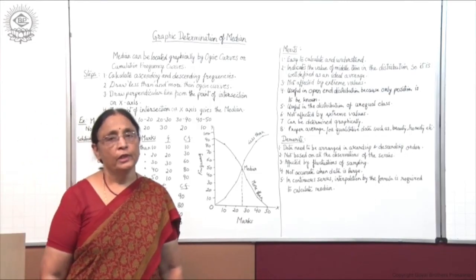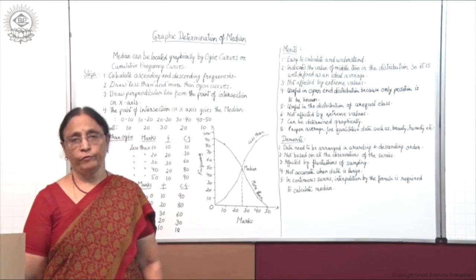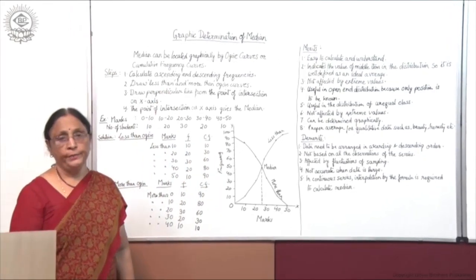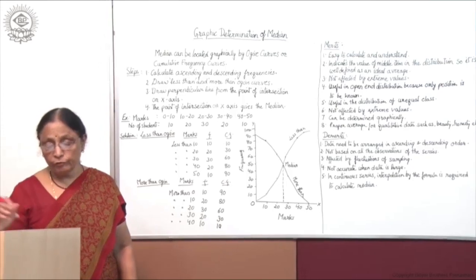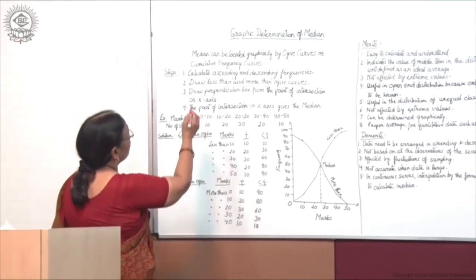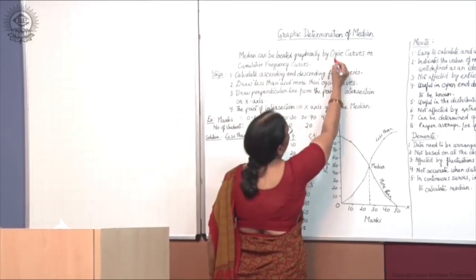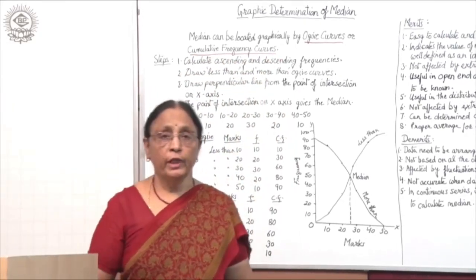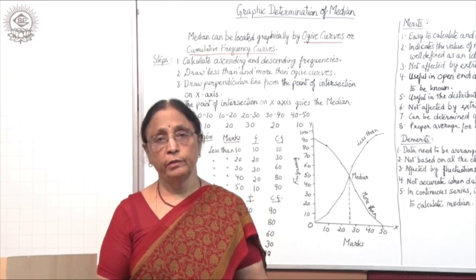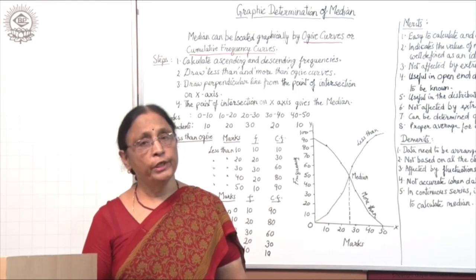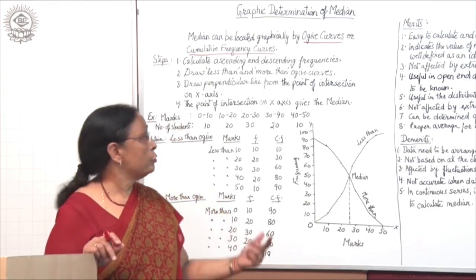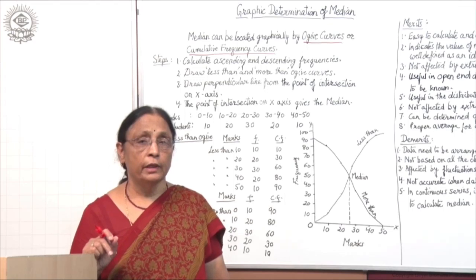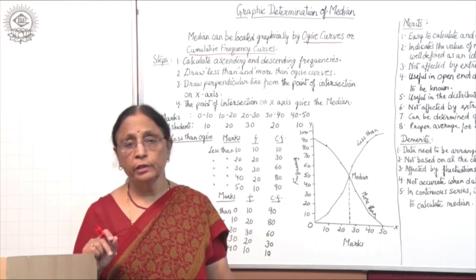Today I will tell you a very easy and interesting way of calculating median — the graphical determination of median. In this case, the median can be located graphically by ojive curves or cumulative frequency curves. With the help of these curves, we can locate median, and these curves indicate less than and more than frequency.